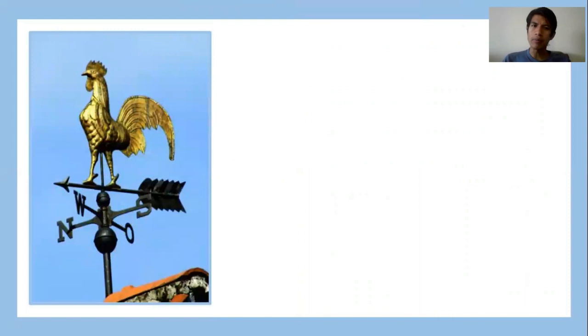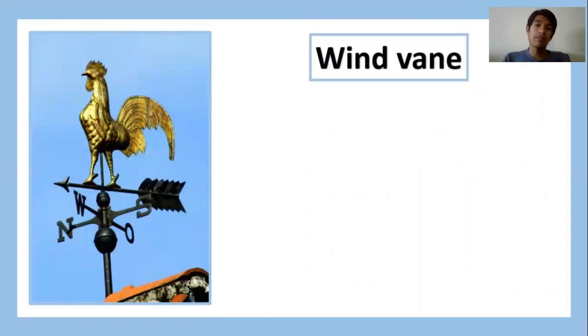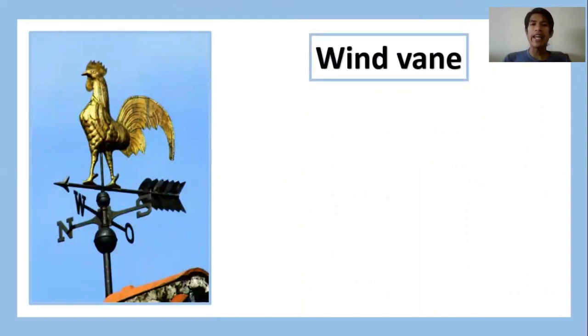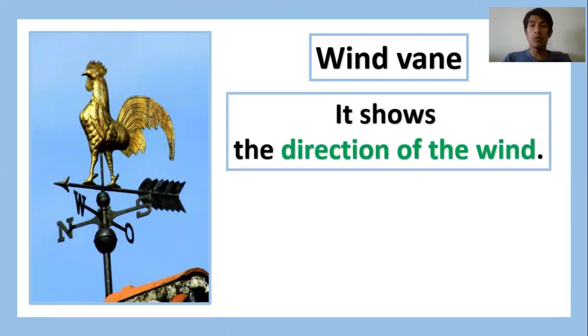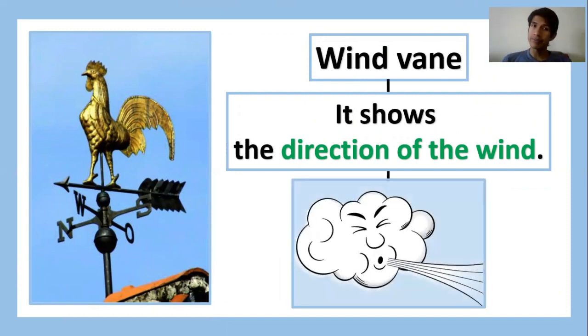Next, we have this one. This is a wind vane. The wind vane shows the direction of the wind. It shows the direction of the wind.